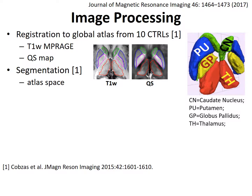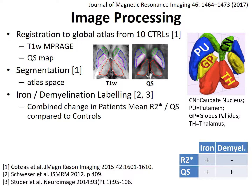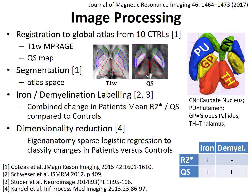The four structures are the caudate nucleus, the globus pallidus, the putamen, and the thalamus. We next labeled regions in deep brain matter as iron accumulation or demyelination using the legend shown in the table on the bottom right, where an increase in mean R2-star and mean quantitative susceptibility of patients versus controls is labeled as iron accumulation, while a decrease in mean R2-star and increase in mean quantitative susceptibility is labeled as demyelination.